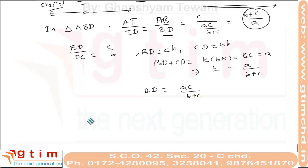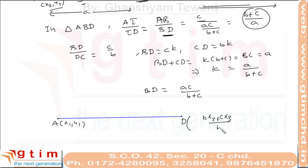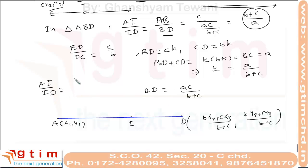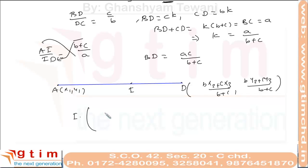Using section formula, the coordinates of incenter I are: x-coordinate = (a·x1 + (b+c)·(b·x2 + c·x3)/(b+c)) / (a+b+c), which simplifies to (a·x1 + b·x2 + c·x3) / (a+b+c).